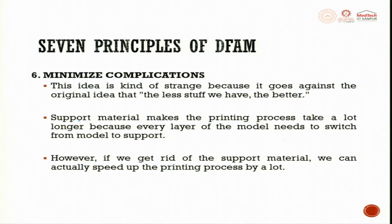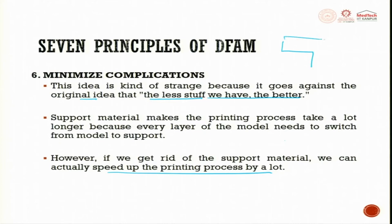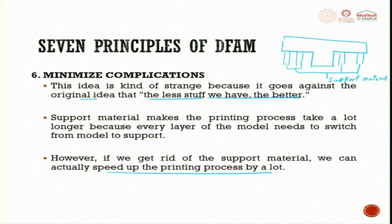Minimize complications: wherever possible, try to make the geometry as simple as possible. Support materials make the printing process take a lot longer because every layer needs to switch from model material to support material. If we get rid of support material, we can actually speed up the printing process significantly. For example, if you have an overhanging feature, try to reduce the overhang so that supporting material is not needed.